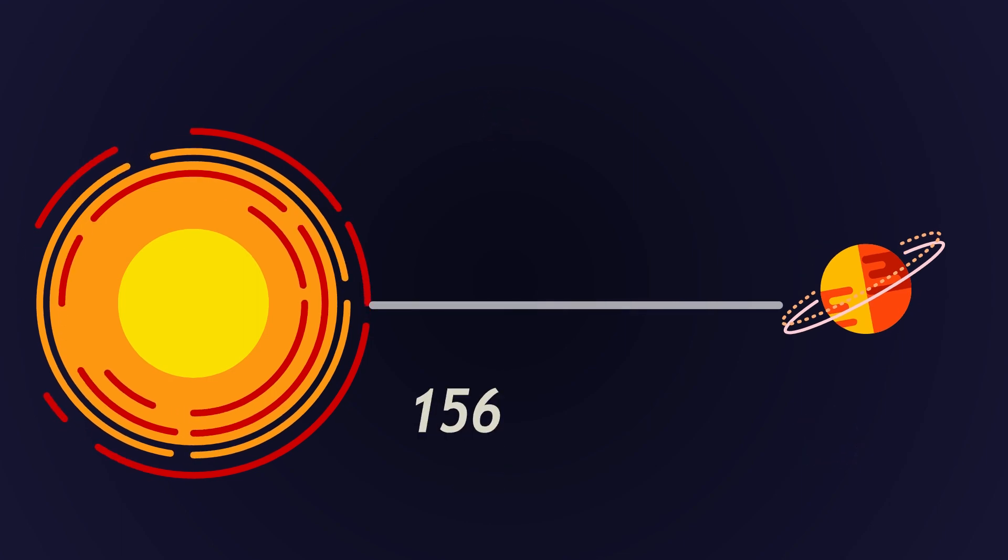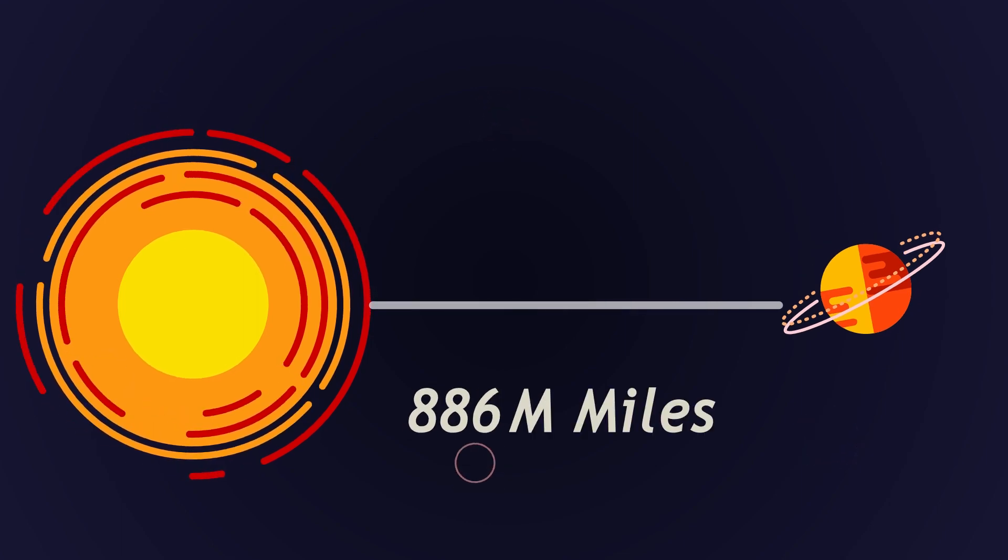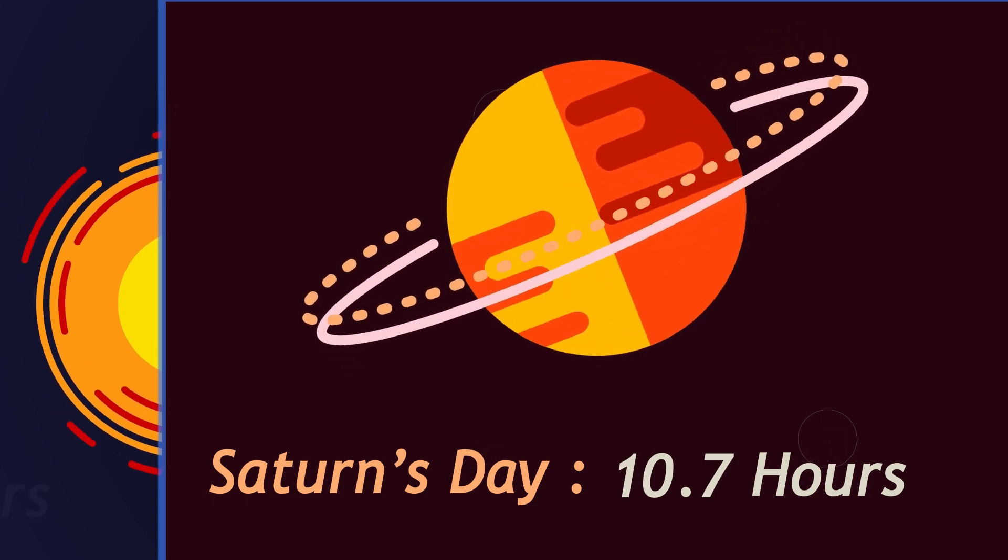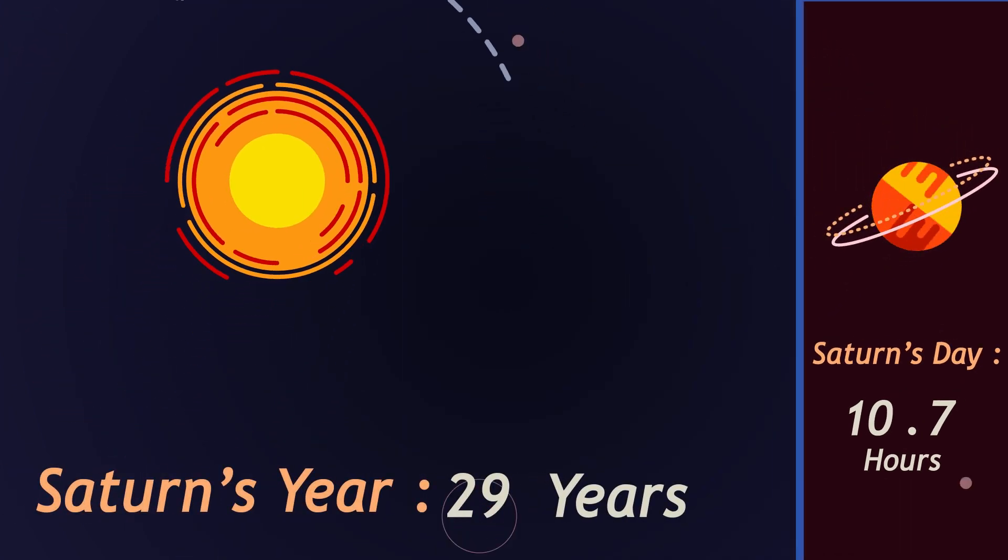Saturn orbits at a distance of about 886 million miles from the Sun. Saturn takes about 10.7 hours to rotate on its axis once, and 29 Earth years to orbit the Sun.